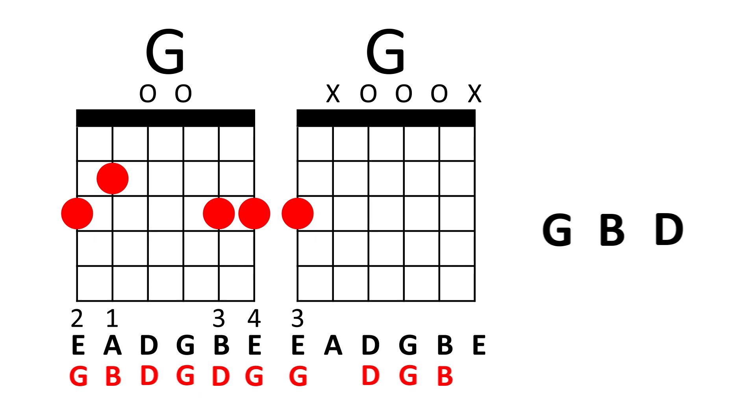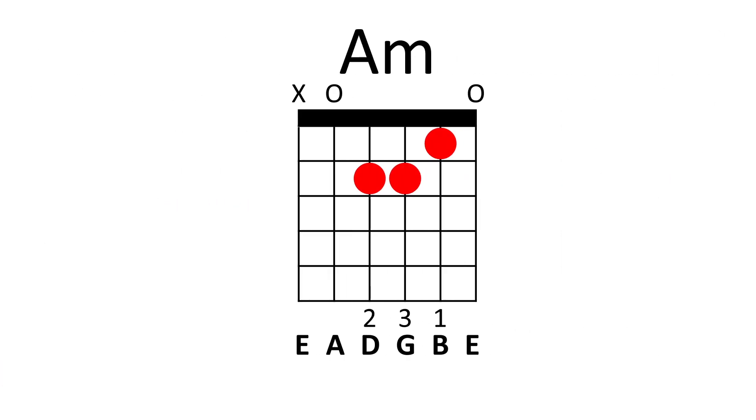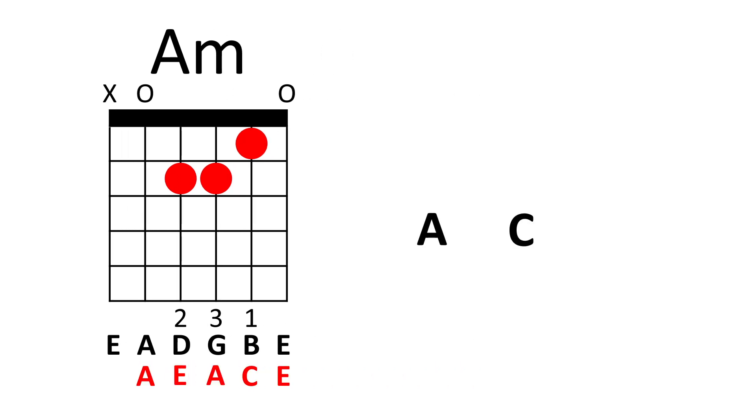Now let's check out the A minor chord. The A minor chord should be the same thing. It's just three different notes. So again, on the fifth string, we have an A note. The fourth string, we have an E note. The third string, we have another A note. The second string, we have a C note. And the first string, we have an E note. So see how the A minor only has A, C, and E.